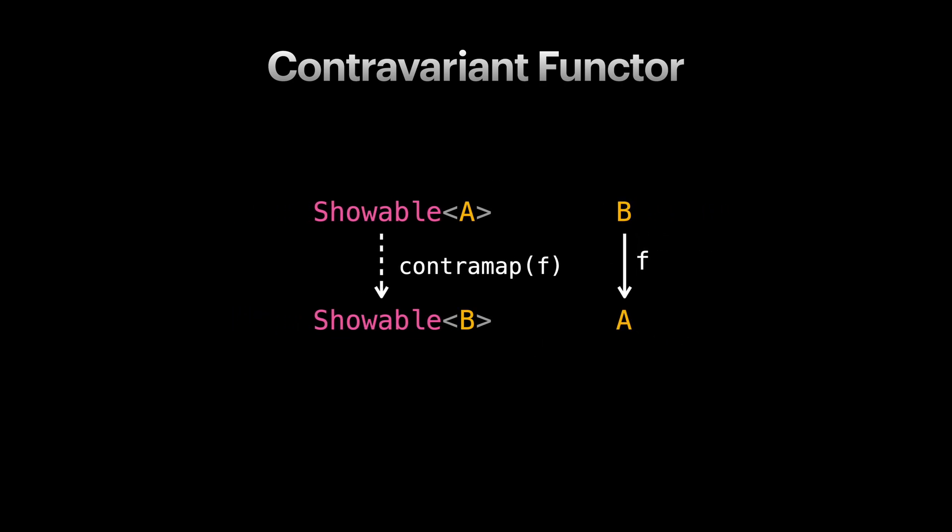So, since Showable is a contravariant functor, we know how to convert Showable structures to each other, just by knowing how to convert what they are consuming.